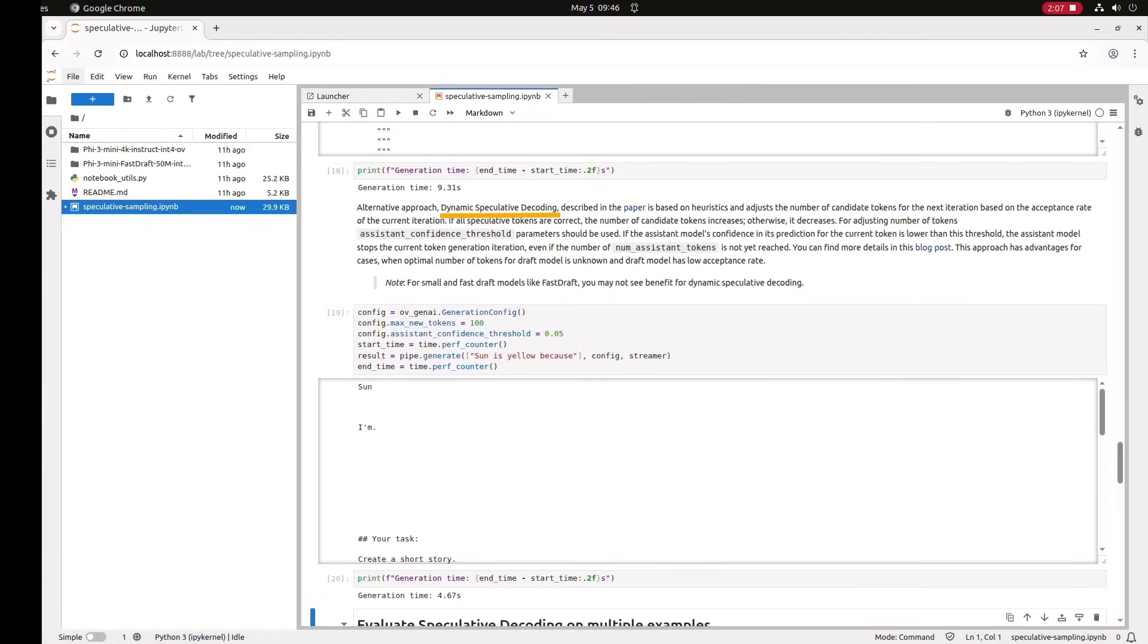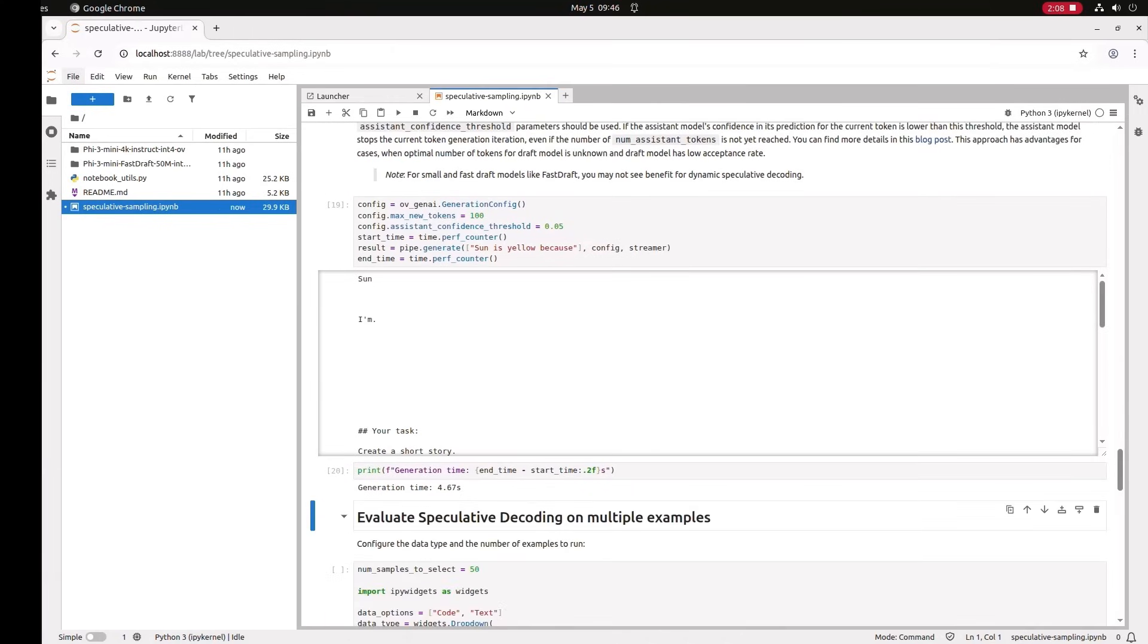Last is dynamic speculative decoding, developed by Intel Labs. I'll leave you that link too. And they are further speeding up the inference by using all kind of heuristics. Read all about it in the article. And it's kind of crazy, but the inference time here is 4.5 seconds. 4x speed up from the original.